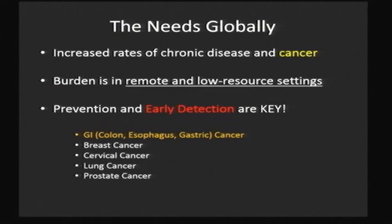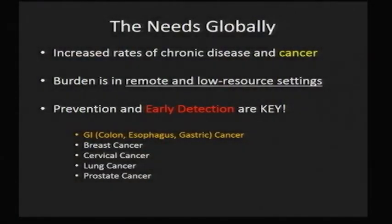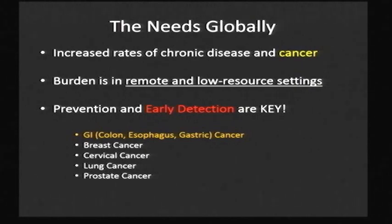What can we say about the needs globally? We are seeing significantly increased rates of cancer and chronic disease worldwide. The burden seems to be higher in remote and low-resource settings because of access to care. The diseases we're looking at are ones that are highly preventable — prevention and early detection can play a significant role. Today I'm going to talk about our experiences in GI malignancy, specifically esophageal, gastric, and colon cancer, though the same models can be applied to other areas of cancer prevention, diagnosis, treatment, and other chronic diseases.